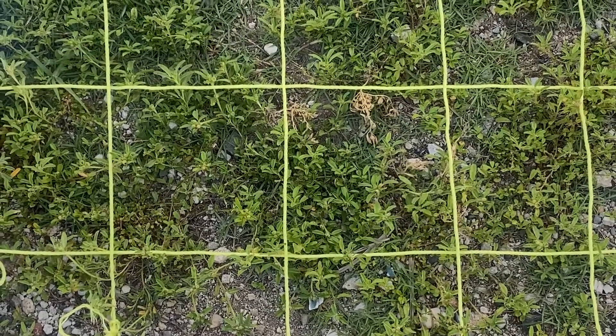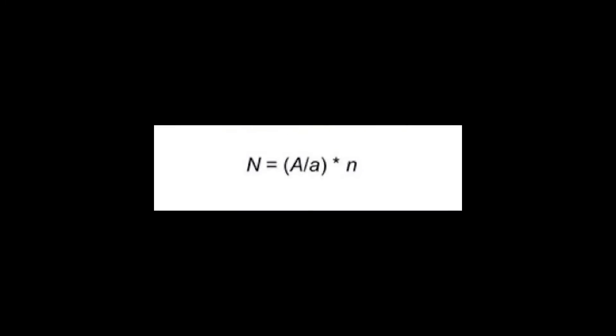Each square is about 7 cm by 7 cm in area. To calculate the estimated population of each organism in this specific area, we use the formula N equals capital A over lowercase a multiplied by lowercase n, where N is the number of organisms in a specific area, capital A is the size of that specific area, lowercase a is the size of the quadrat squares, and lowercase n is the average number of individuals in the quadrat square.